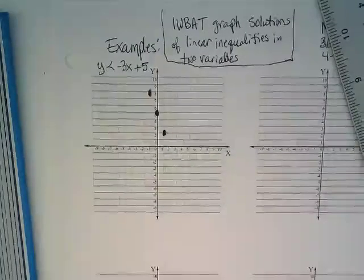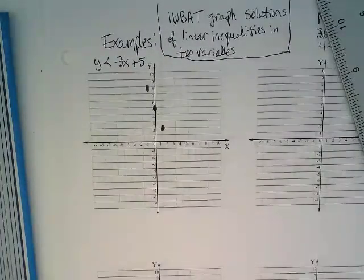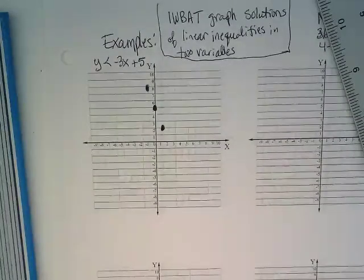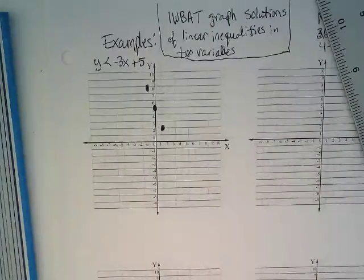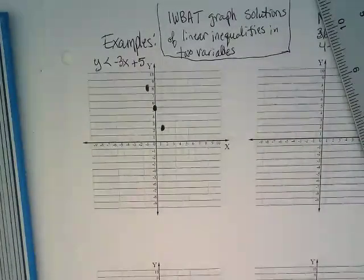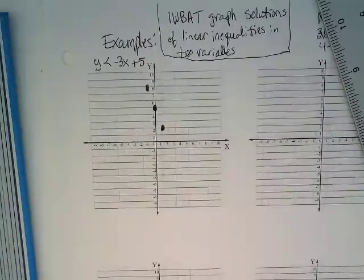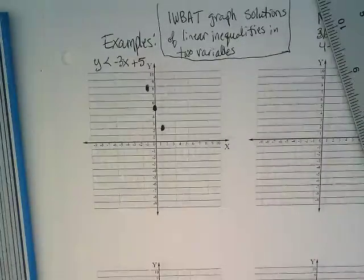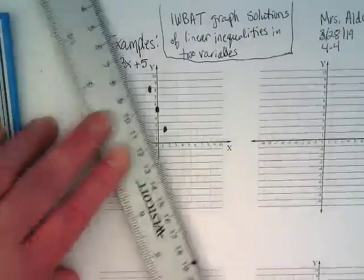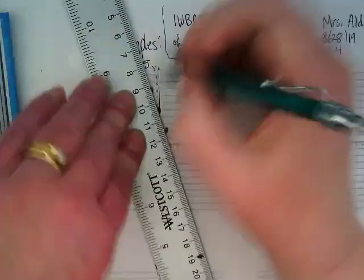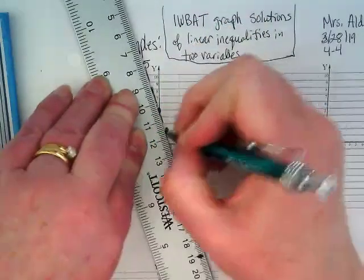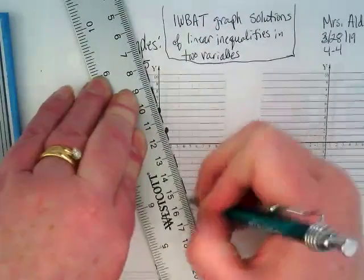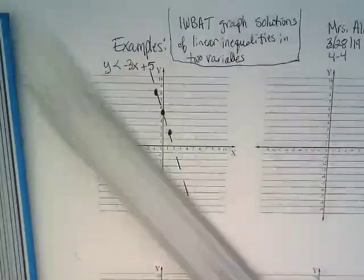Now we need our straight edge. The temptation here is to draw a solid line, but remember, it's not equal to. It's less than alone, so it's a dashed line. There's two ways to do this. How many of you are using a pencil? You could draw the line and then erase parts of it. Does that make sense? I'm using a pen, so I'm going to make sure I do mine dashed. I'd like you to have your line go all the way across your graph. Think of that line as a barrier.